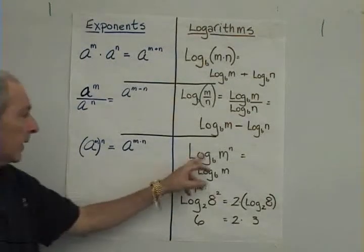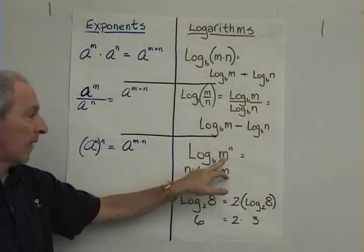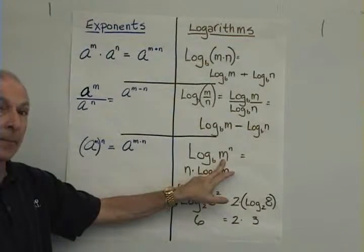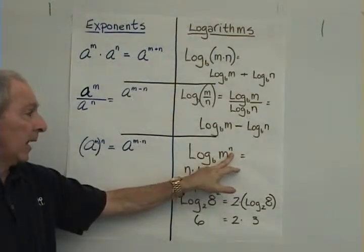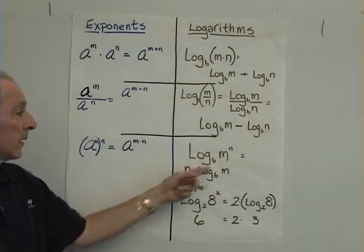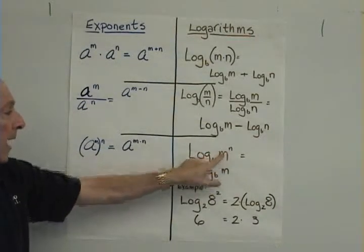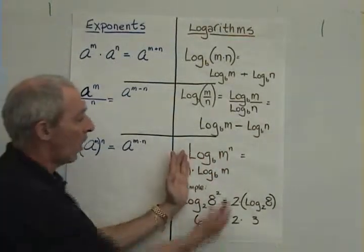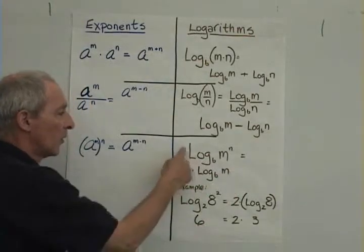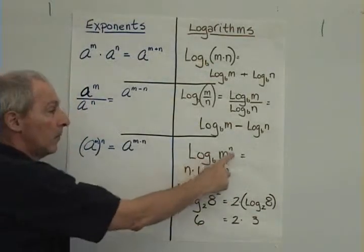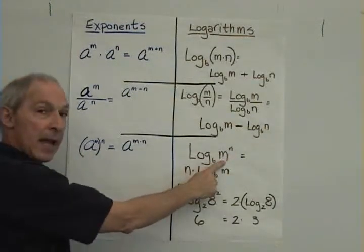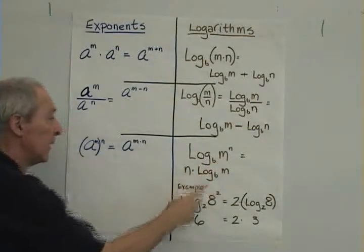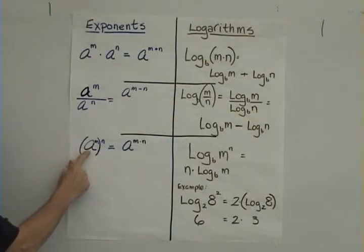For logs, when we have a log to a base b of m, and that number m is raised to an exponent, then our answer is really n times this log right here. So this log, which is an exponent, is being raised to another exponent. Remember log base b of m signifies an exponent, similar to right here.